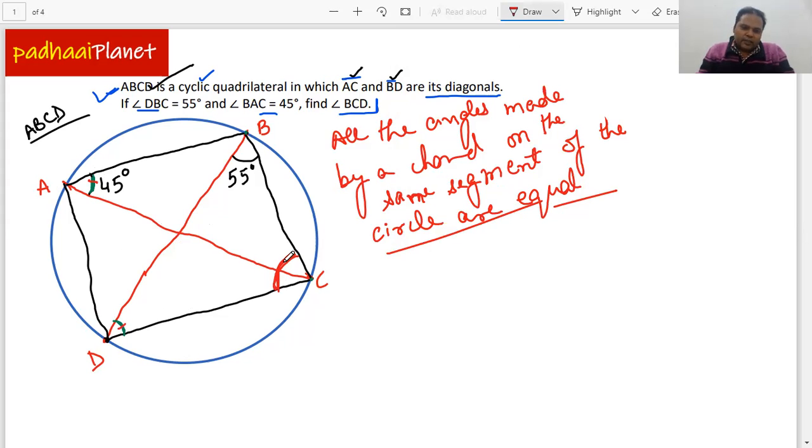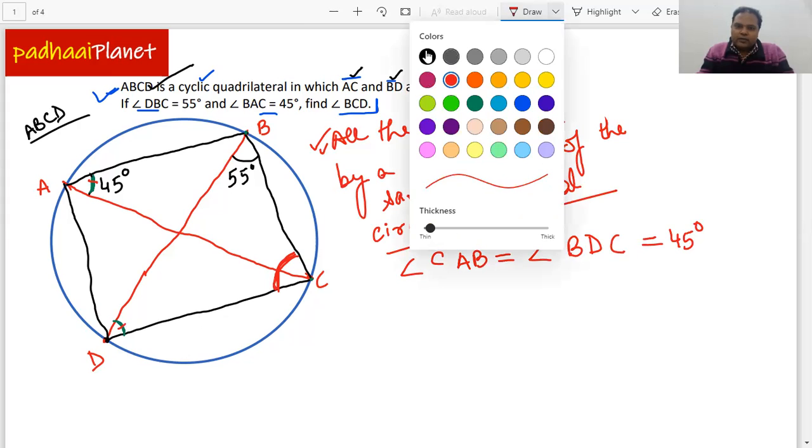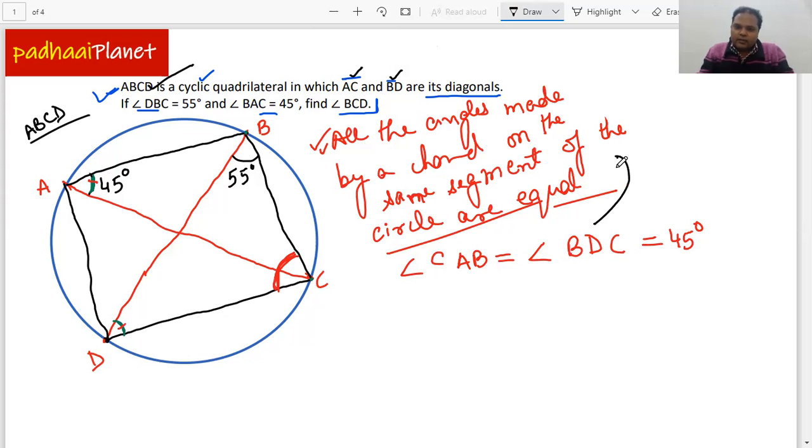Now we need to find this angle out. So what we can clearly say is that with the help of this theorem, we already know that angle CAB is equal to angle BDC. And that's equal to 45 degrees. And the reason is that they are same segment angles. Right. So it's very simple. Once we have the understanding of this theorem, it's absolutely simple. And there are many more questions which are using this particular theorem. I also have a video there on my page, you can have a look at it wherein we are proving this theorem. Right.